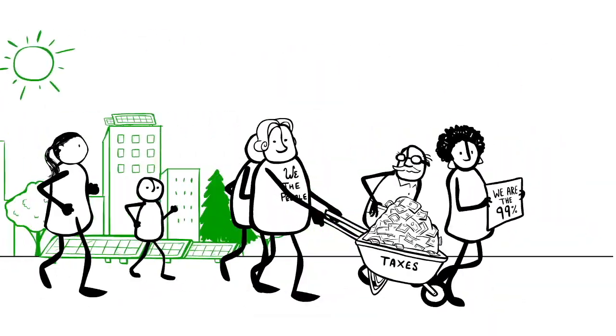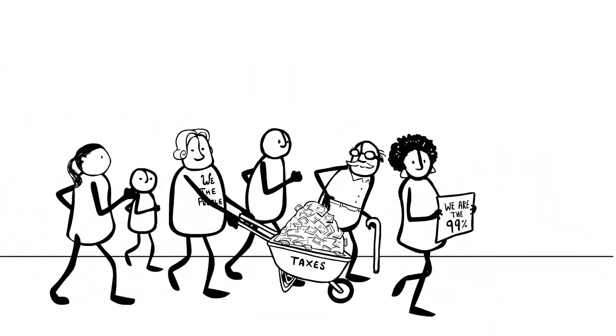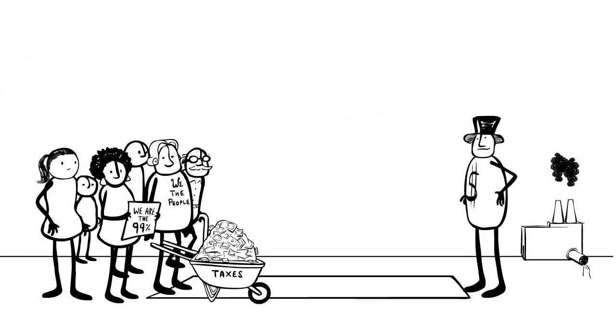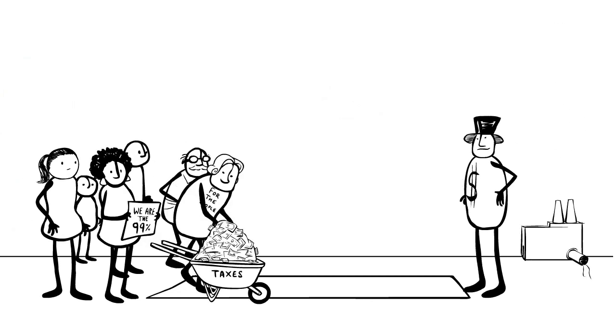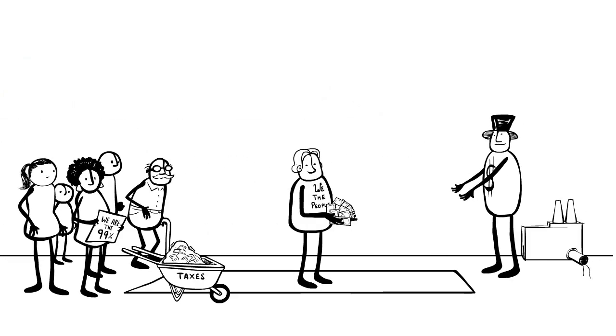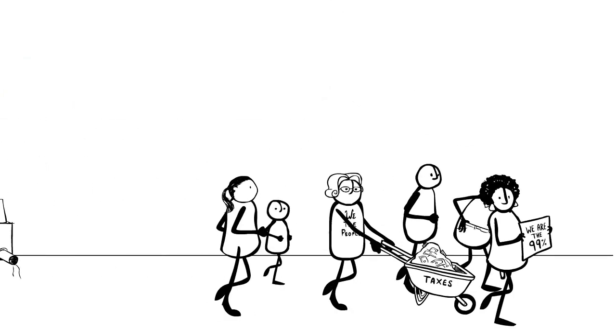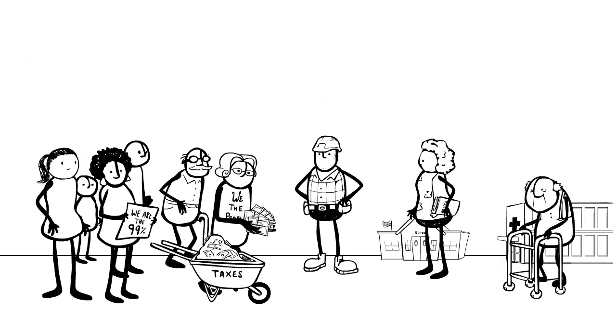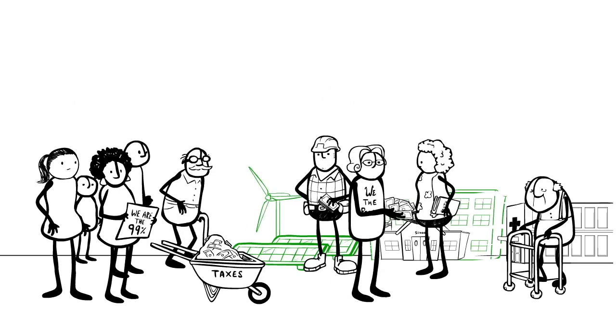But you know who has the real power? We do. What if we got as protective of our tax dollars as we are with the rest of our money? What if we told our government what we want, and what we'll do if we don't get it, starting with voting them out? We could redirect these dinosaur subsidies, freeing up hundreds of billions of dollars. Forget broke, we could start building a better future right now.